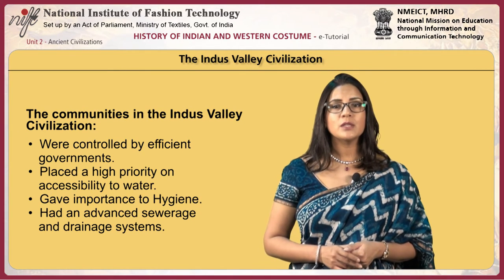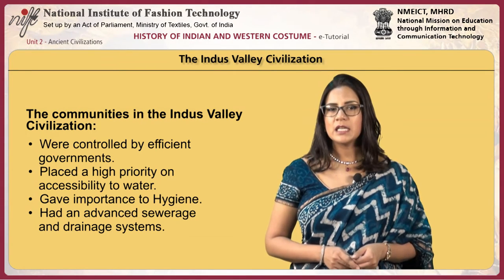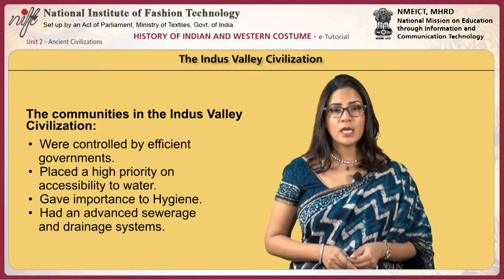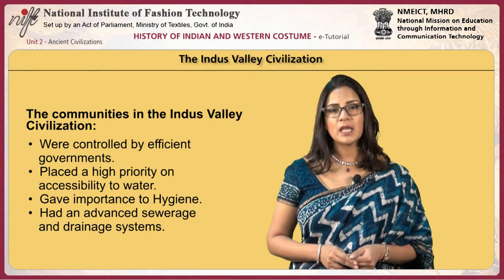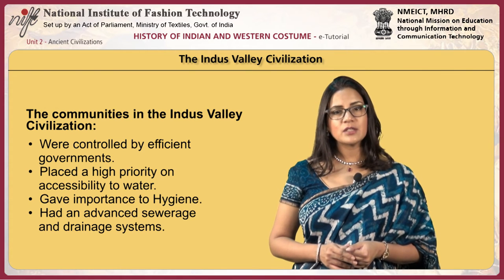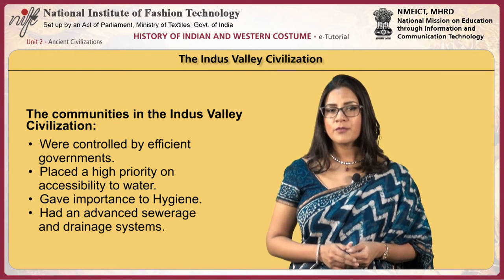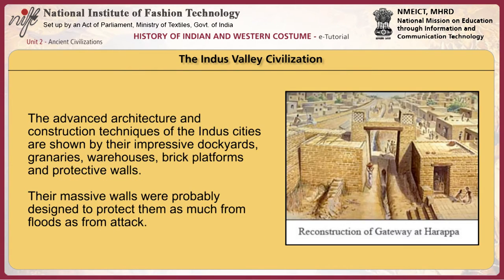Hygiene was also important to the inhabitants. The urban planning included the world's first known urban sanitation systems. Within the city, people obtained water from wells. Within their homes, some rooms had facilities in which waste water was directed to covered drains lining the major streets. These ancient Indus sewage and drainage systems were far in advance of anything found in contemporary urban sites in the Middle East. The advanced architecture and construction techniques of the Indus cities are shown by their impressive dockyards, granaries, warehouses, brick platforms and protective walls.